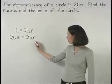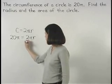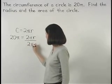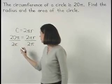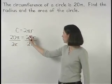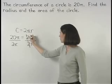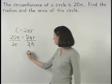Now to solve for r, we divide both sides of the equation by 2 pi. On the right side, the 2's cancel, and the pi's cancel, and we're left with r.